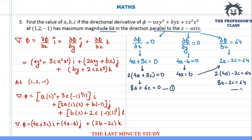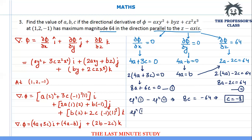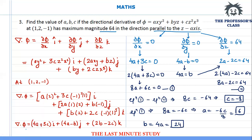Labeling 8a + 6c = 0 as equation 1 and 8a - 2c = 64 as equation 2, I subtract equation 1 from equation 2 to get 8c = -64, giving c = -8. Substituting back into equation 1: 8a = -6c = 48, so a = 6. Then b = 4a = 24. Therefore the values are a = 6, b = 24, and c = -8.